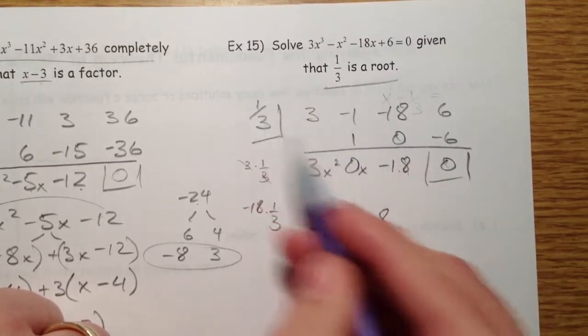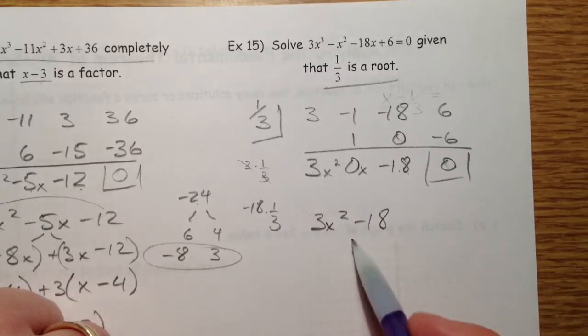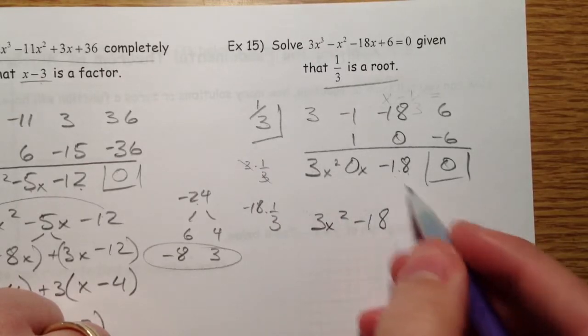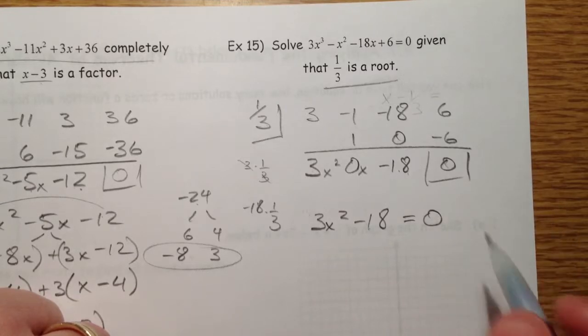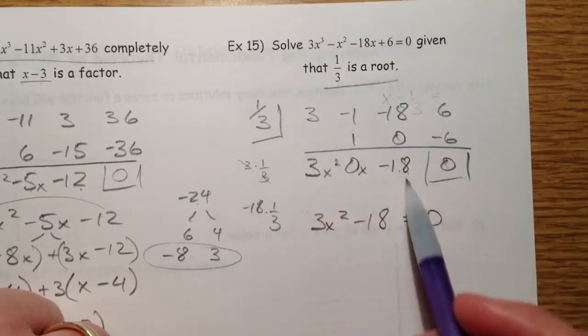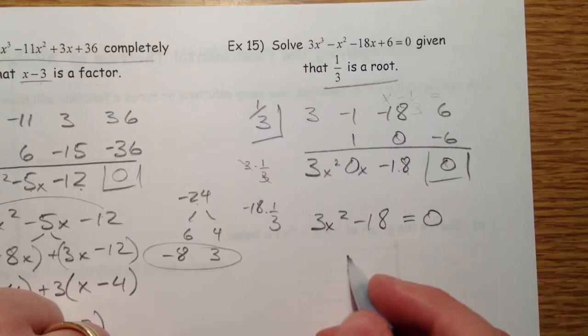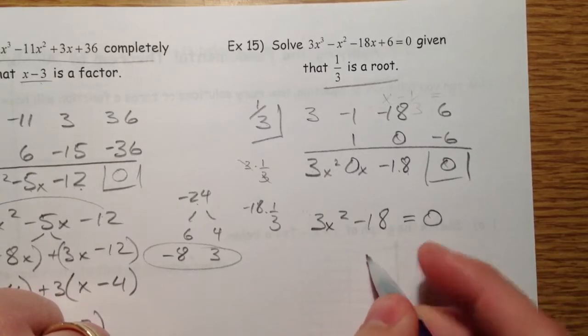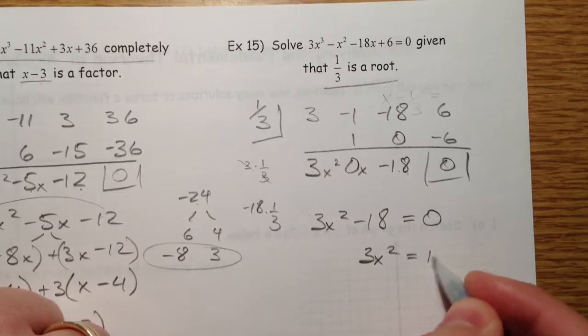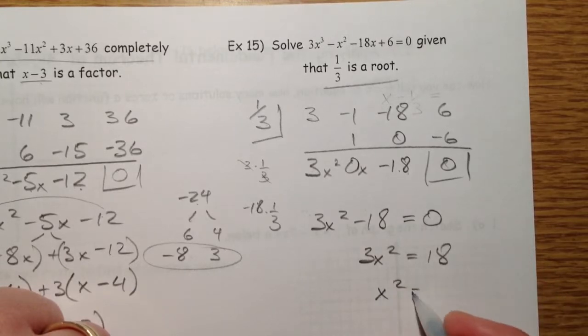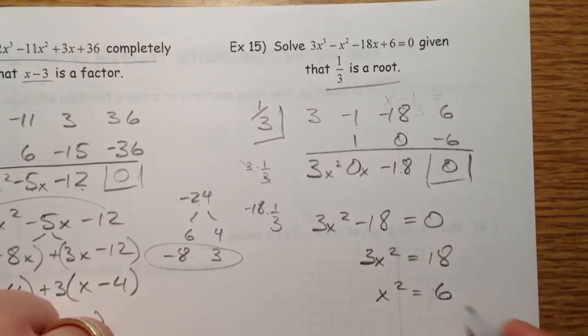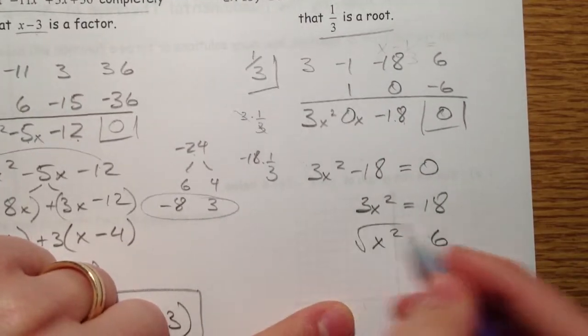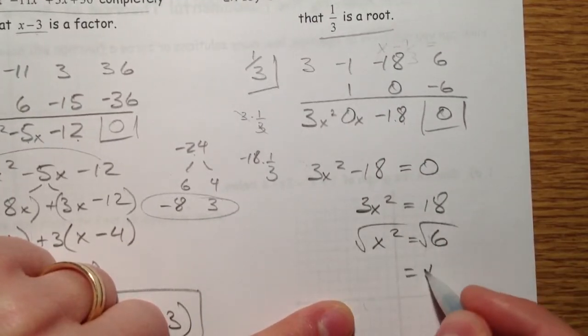Remember from what we did before, this isn't actually what we divided by. So if you wanted to divide by 3, you could. But, we just divided out a root. And so we could set the rest of this equal to 0 if you wanted to. 3x squared equals 18. Divide by 3. You get 6. And you take the square root of both sides. Remembering plus or minus.